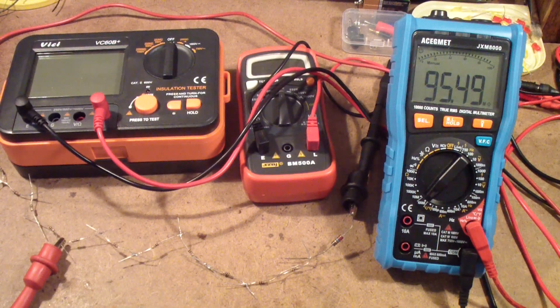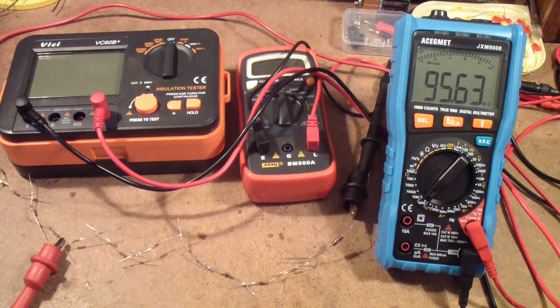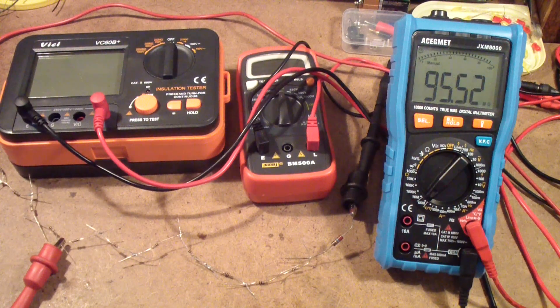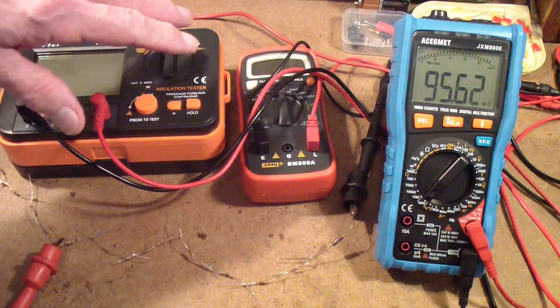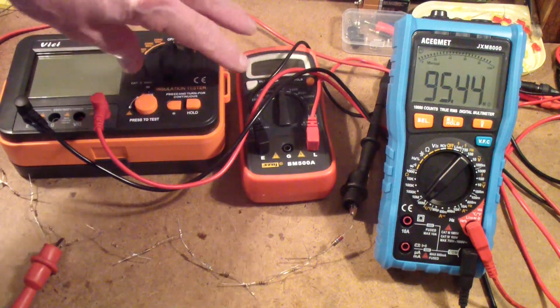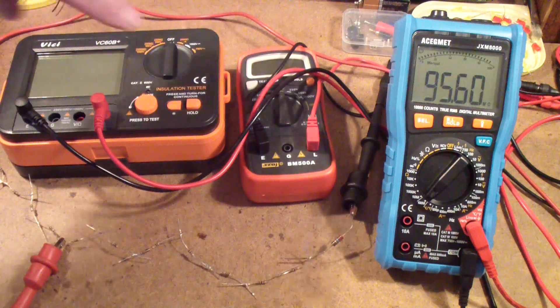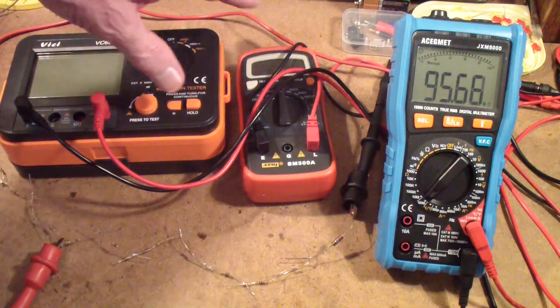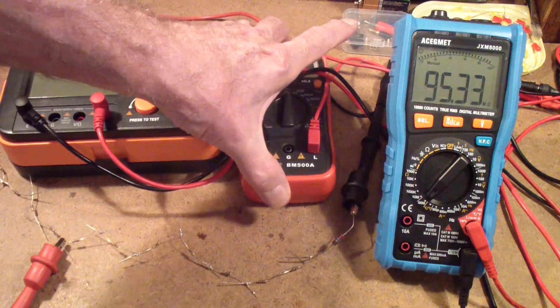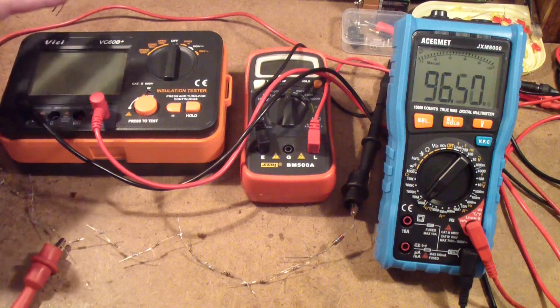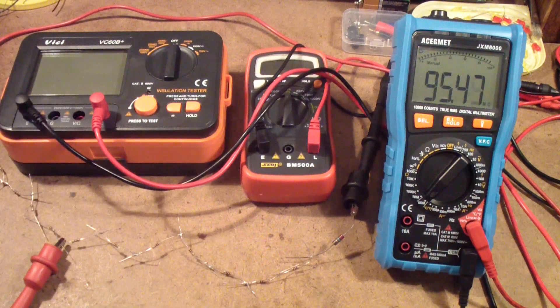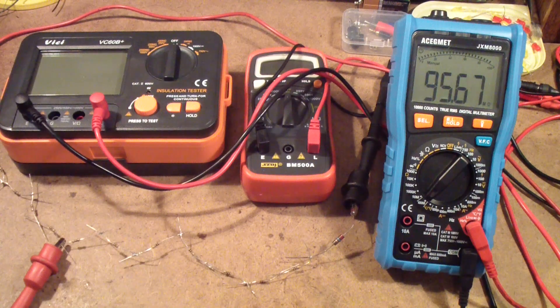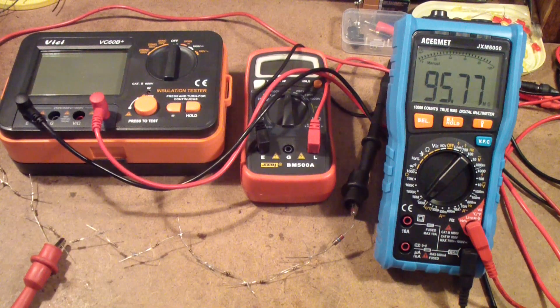Today I'm working on measuring high values of resistance. The meters to do that are sometimes called mega ohm meters, that's what these two are. In some cases they're called insulation resistance testers and they have different names, but basically the idea is they're designed to measure resistances in the hundreds of mega ohms.